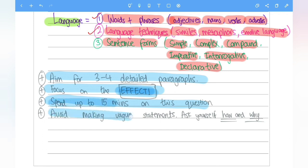And finally, avoid making vague statements. So ask yourself how and why. Don't tell us it makes the reader interested or this creates tension. Tell us how and why. So avoid these vague statements and be specific with your analysis. And if you can do this accurately, then for sure you can achieve the higher marks.